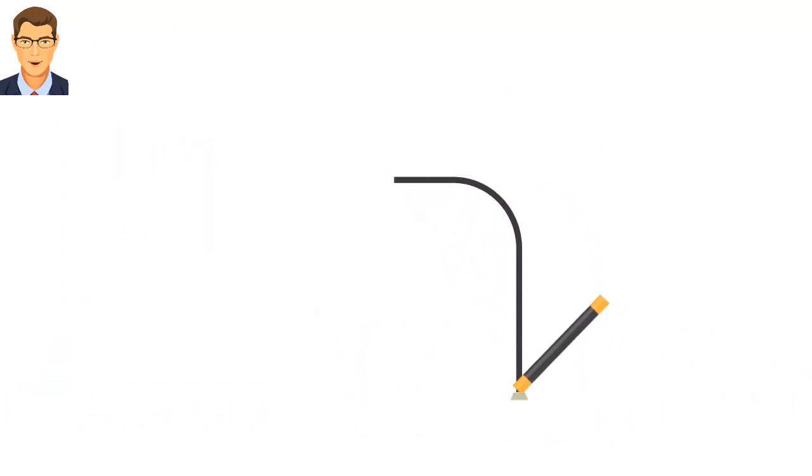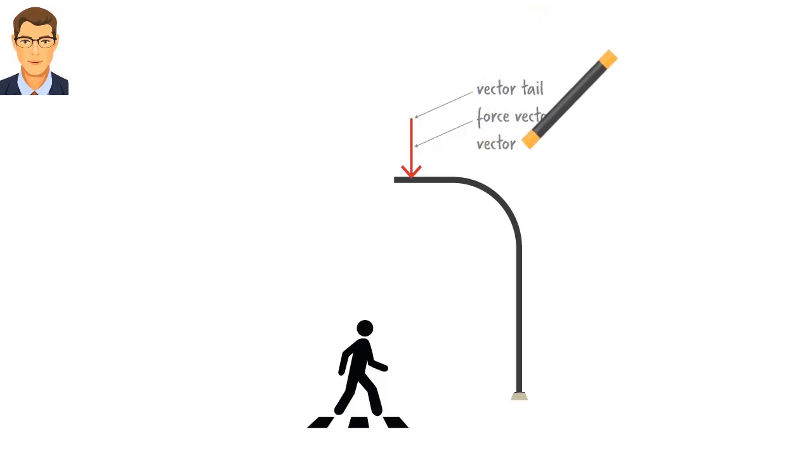Force is a vector. It has a magnitude and a direction. Consider the weight of a typical traffic light. For structural analysis purposes, we can represent it as a vector, like this. A vector has a tail, a head, and a magnitude. The length of the vector represents its magnitude. Alternatively, we can write the vector's magnitude next to it, like this.